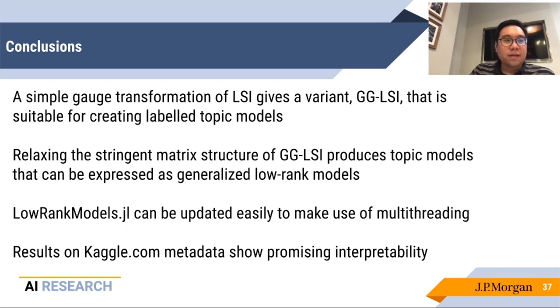So in summary, a simple gauge transformation of SVD-based methods gives you a way to unambiguously assign semantic meaning to topic models in a way that is not generally done. If we relax the stringent matrix structure that we have imposed, we can express the resulting problem and solve it using the generalized low-rank models framework of lowrankmodels.jl. Very simple updates to the code make it run efficiently using Julia's 1.3 multi-threading model. And the results on Kaggle.com metadata that we saw earlier saw promising interpretability. I'm making no claims that the analysis is correct, but this hopefully convinces you that a very simple matrix factorization-based approach to analyzing the data gives you a very crisp way of analyzing whether or not the data, the results that you get make sense, and whether or not the patterns that you uncover are semantically meaningful. Thank you very much.